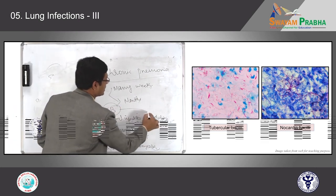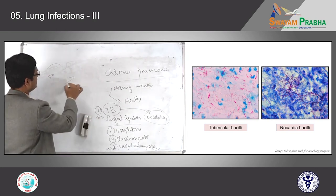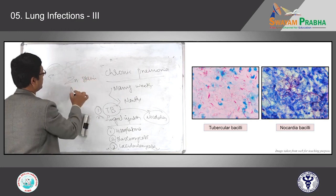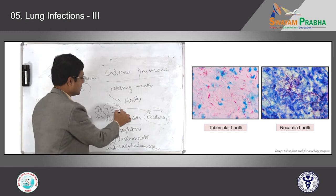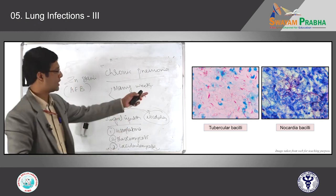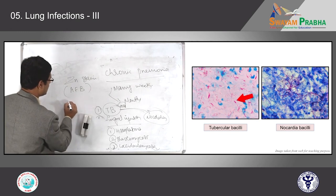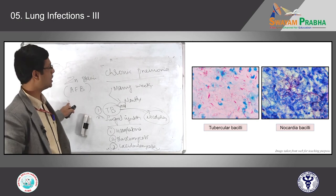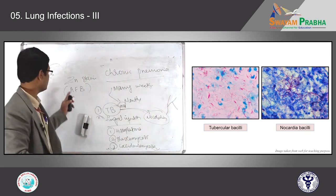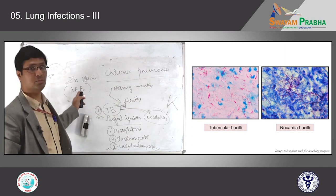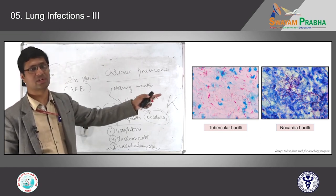To differentiate TB bacilli from Nocardia, the most common stain used is Ziehl-Neelsen stain — the acid-fast bacilli (AFB) stain. When you do AFB stain, you can differentiate mycobacterium tuberculosis from Nocardia. The first picture shows mycobacterium tuberculosis: tiny, slender, beaded-like structures. Compared to that, Nocardia species have elongated, branching acid-fast bacilli. Both take up the acid-fast stain, but by morphology you can differentiate tubercle bacilli from Nocardia bacilli.